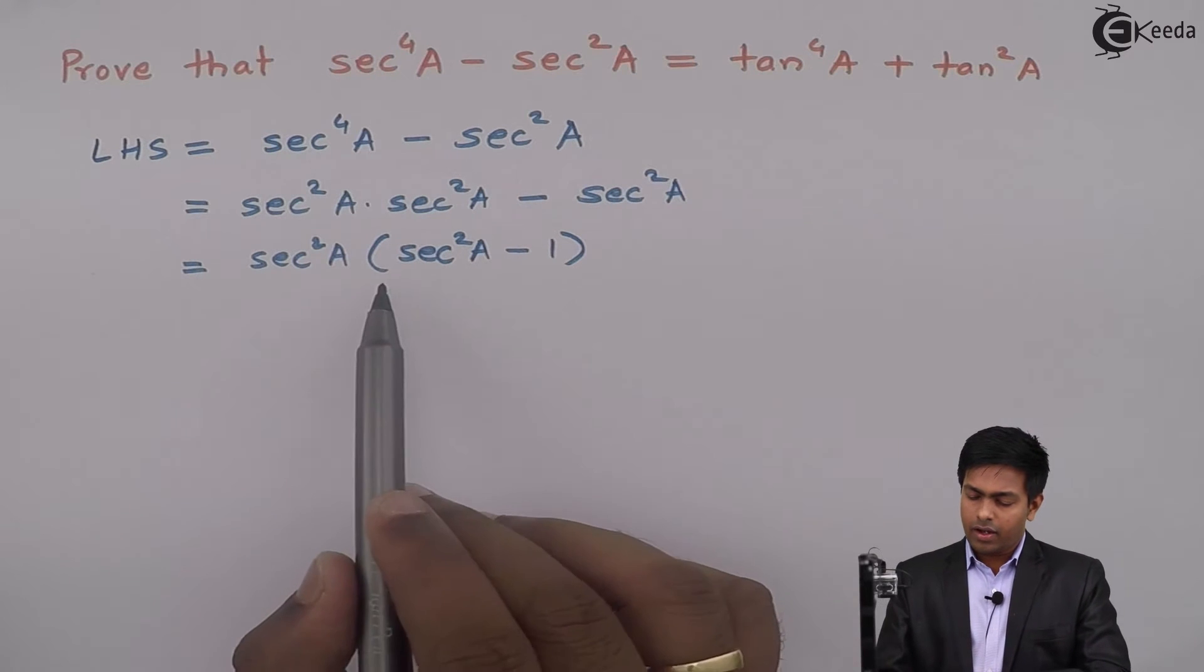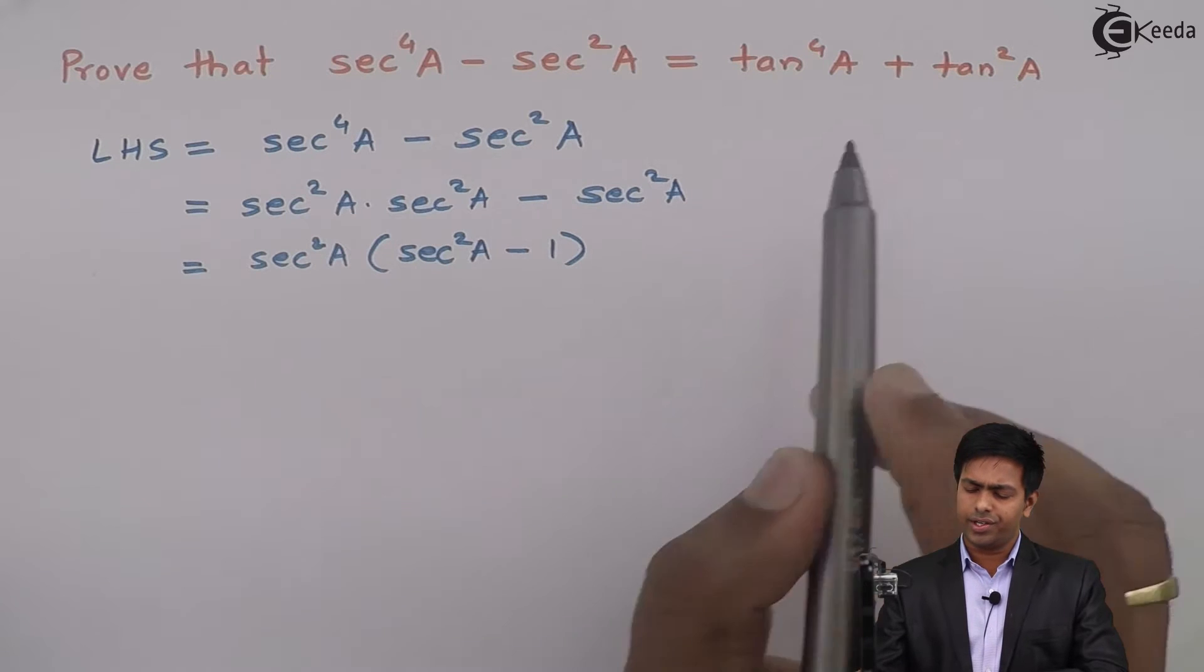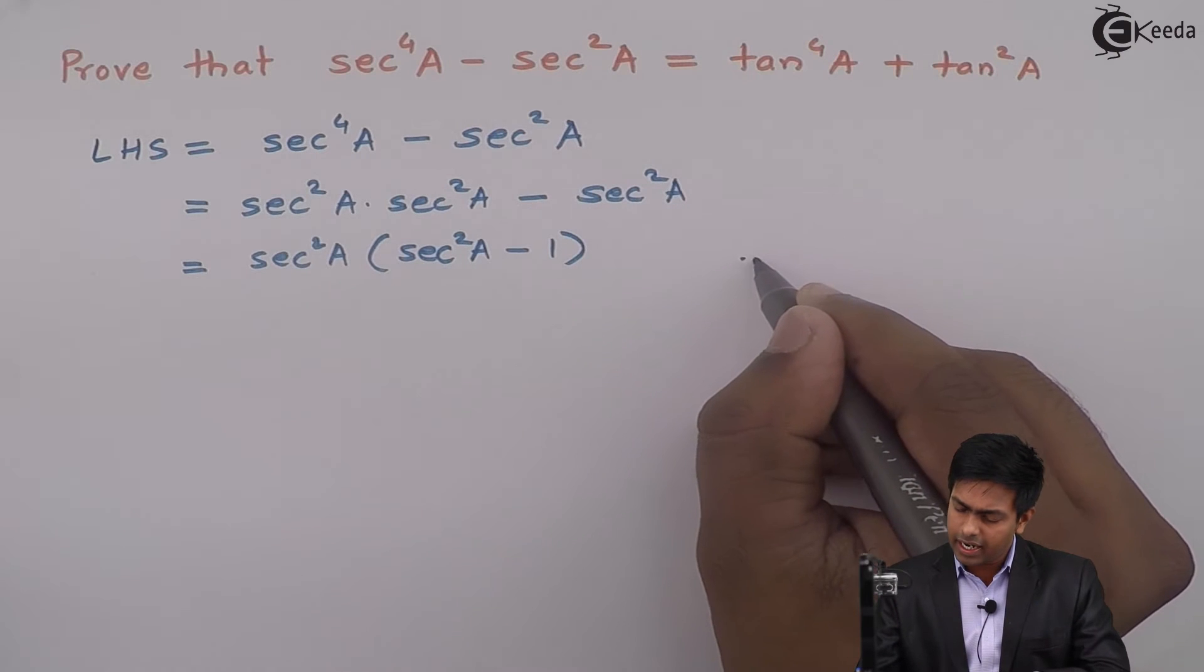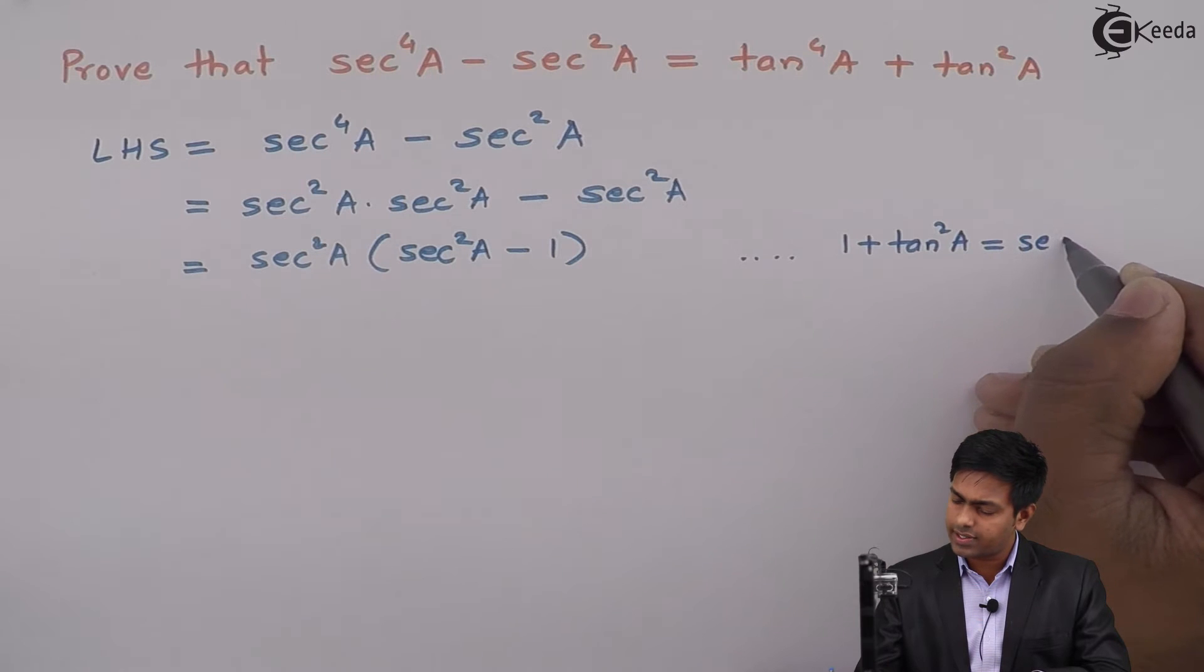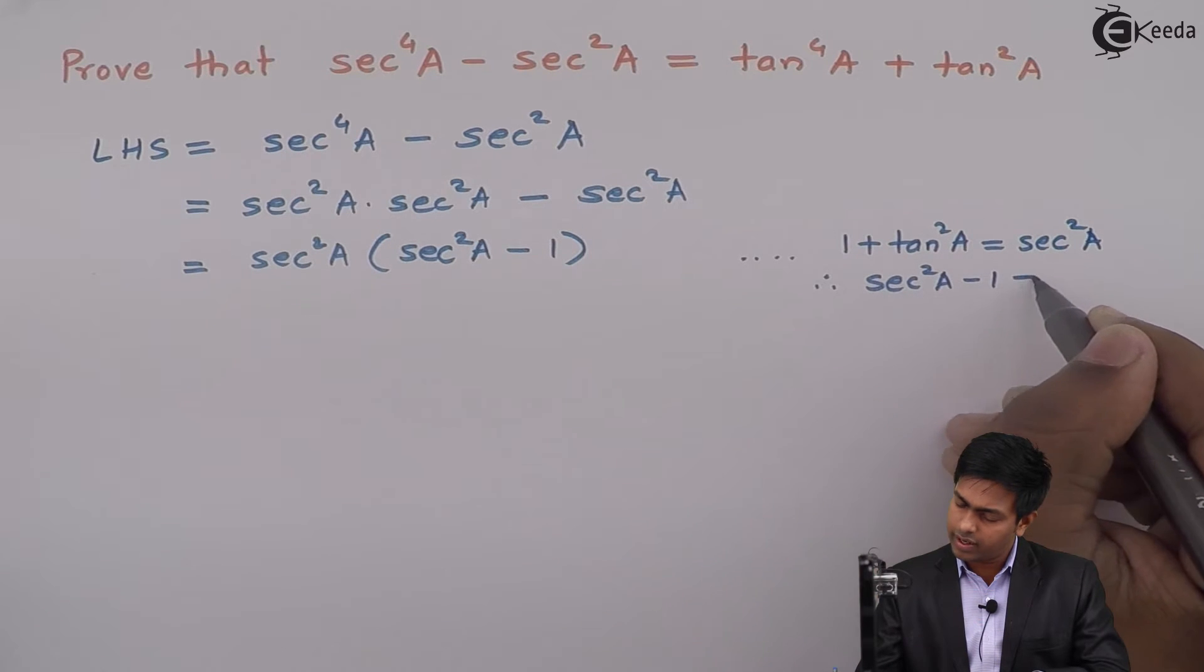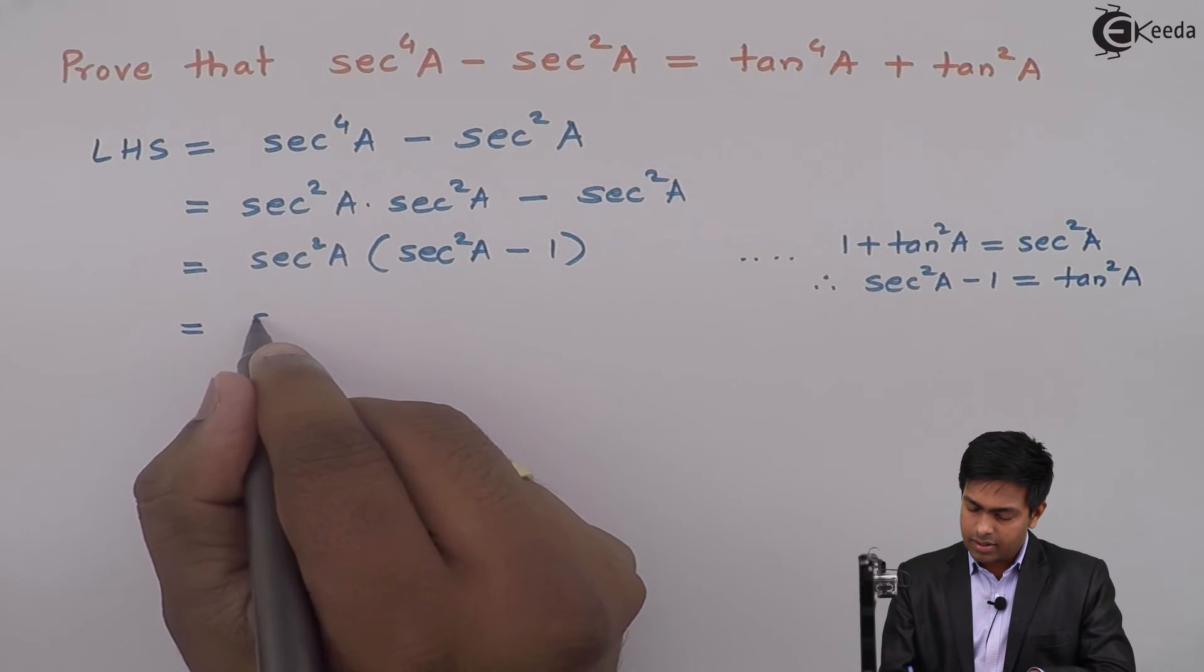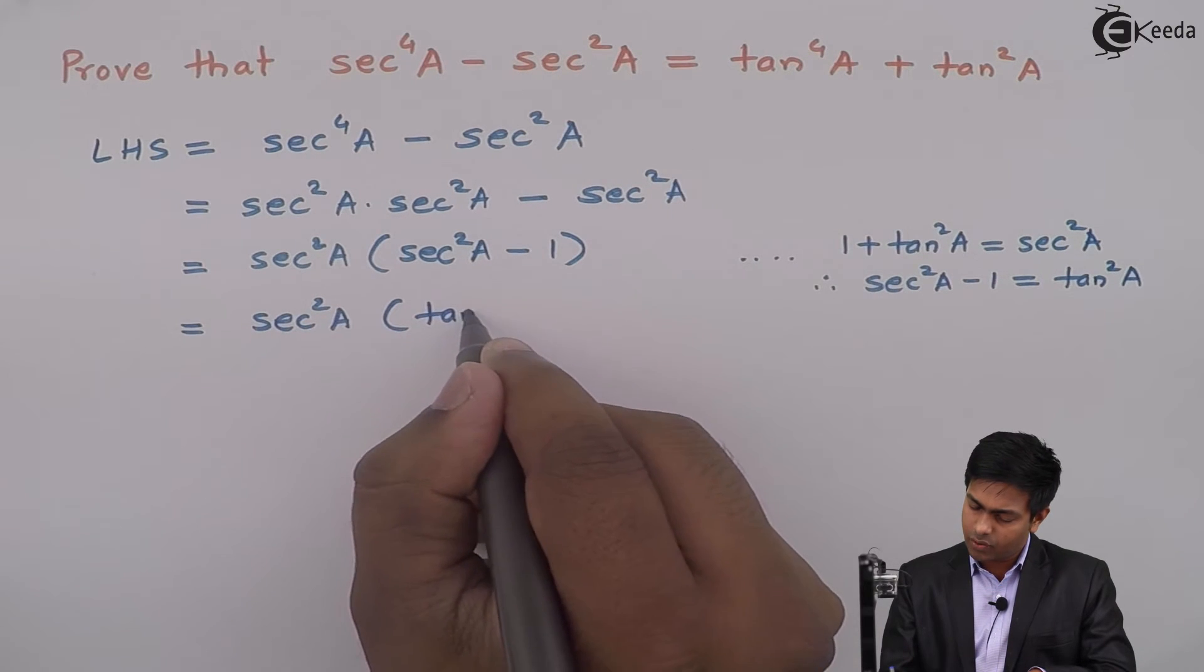Now as we want everything in terms of tan on the right hand side, what I will do is I will substitute formula of sec square A in terms of tan square A. So here we know the formula that 1 plus tan square A is equal to sec square A, and therefore we can say that sec square A minus 1 is equal to tan square A.